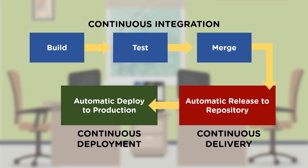The build process and test case automation validate how the source code is working — how compilation is going and how test cases are executing. However, once continuous integration is successful, we cannot give a 100% guarantee that the code base is working fine, since there could be errors in the production environment not covered by those test cases.